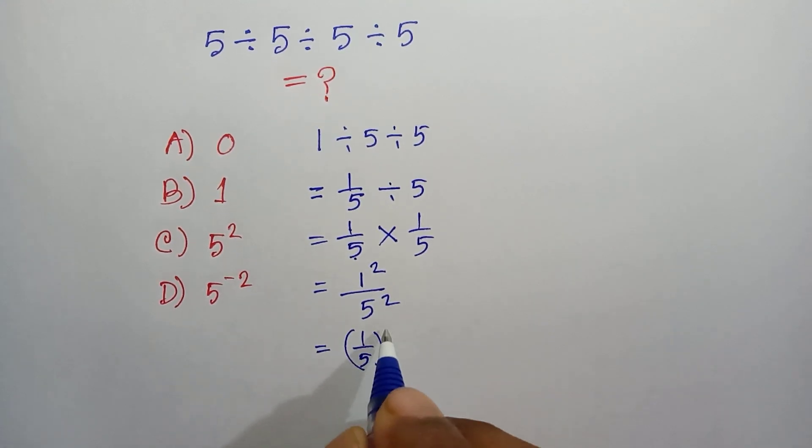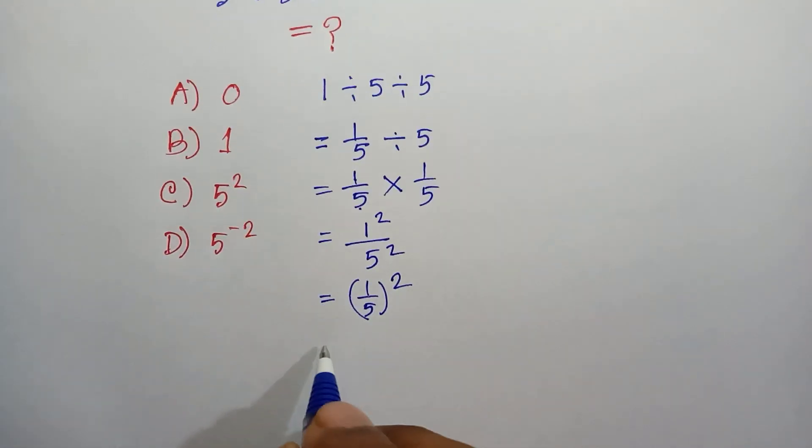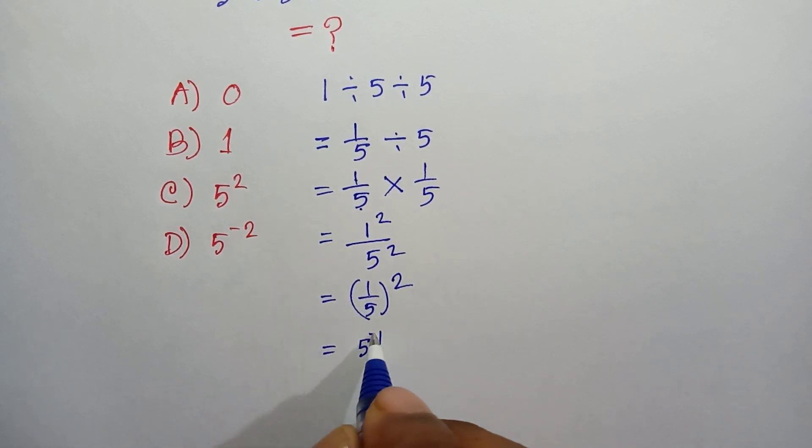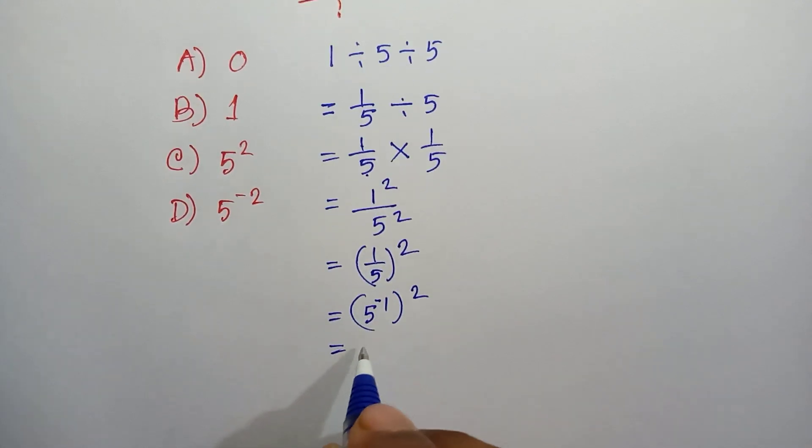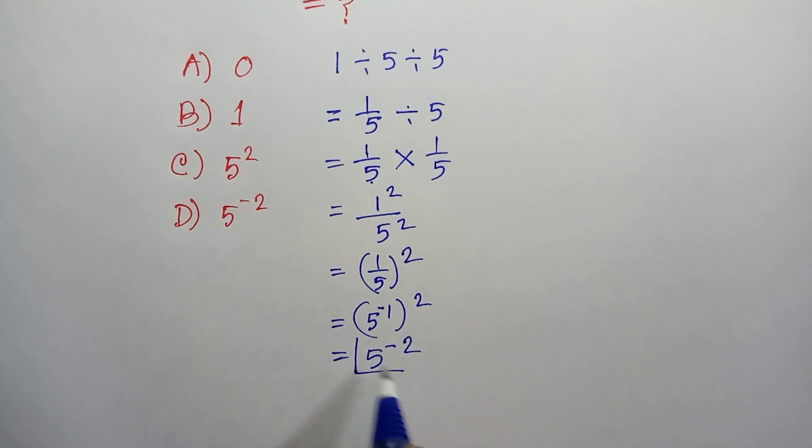All to the power 2. And one over 5 can be written as 5 inverse, one over 2. And this can be written as 5 to the power minus 2. This is the value of this equation: 5 to the power minus 2.